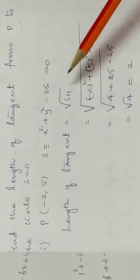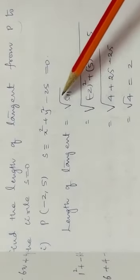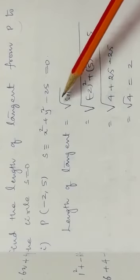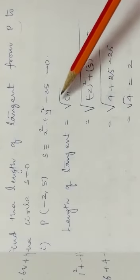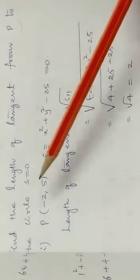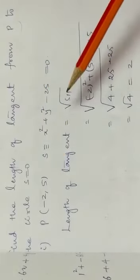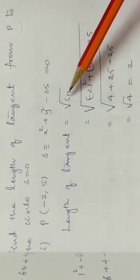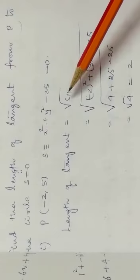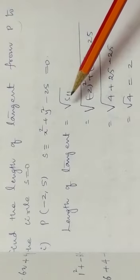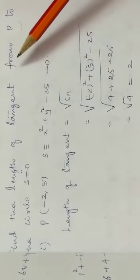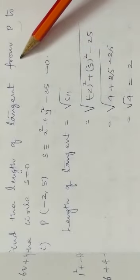So, the justification I'm giving: S11 inside the root must be greater than 0, which means it's an external point. S11 must be positive because the number under root must be positive. Therefore, it must be an external point. External point means from, right?